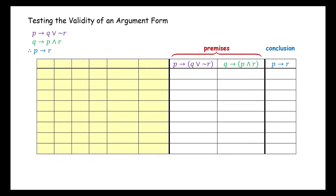Now we're ready to fill in the headings for the columns that precede the premises. These columns represent the simpler statements we will need to determine the truth values for each premise. So, working from left to right, we enter the column headings P, Q, R, not R, Q or not R, and P and R.